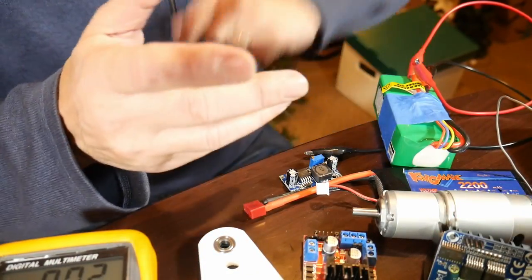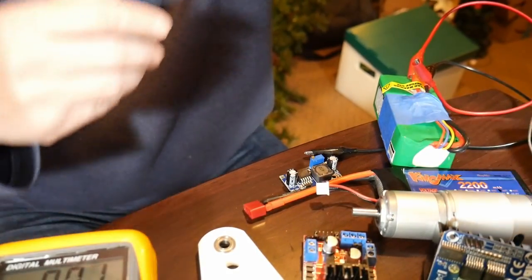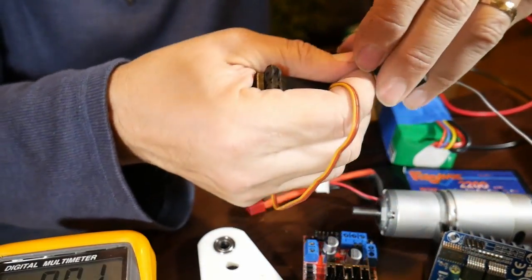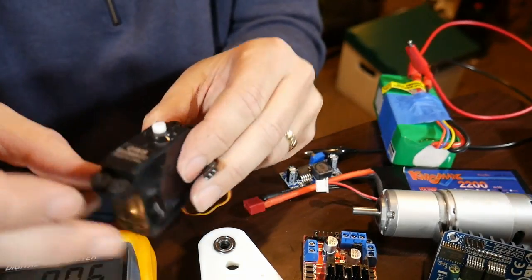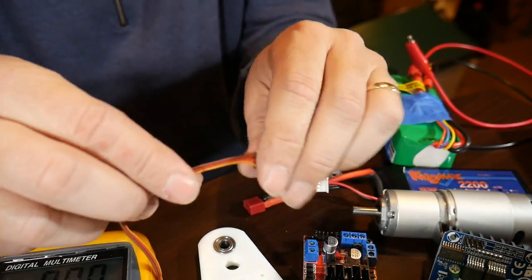Same thing if you are doing things like with servos. Servos can draw power as well, certainly more. Arduino only really wants to supply something like 0.5, just like 500 milliamps or something like that. Whereas some of these things can draw a lot more than that.